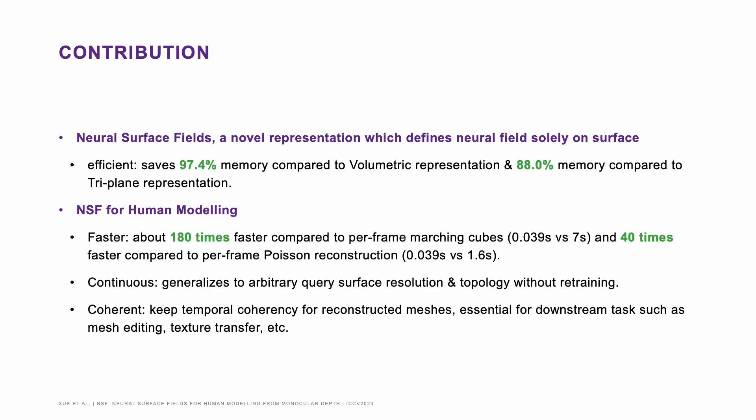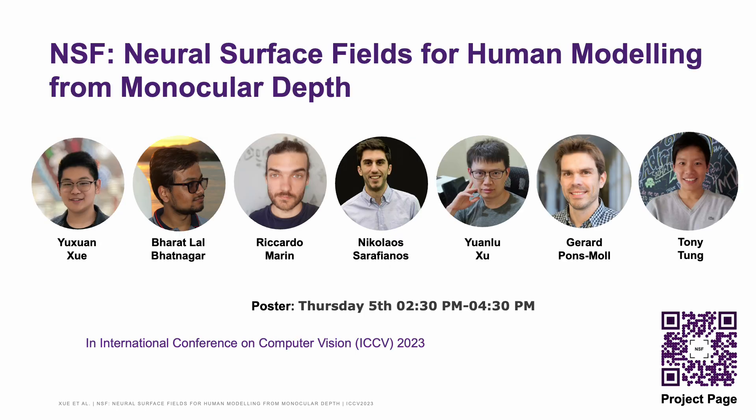We propose NSF, a hybrid representation which is more efficient than existing representations. In human modeling, NSF is faster and keeps coherency compared to implicit-based works. It is also continuous and flexible compared to mesh-based works. We believe this hybrid representation can have a variety of useful downstream applications and contribute further to the community. For more details and results, please refer to our paper and the project website. If you have any questions or suggestions, I warmly welcome you to our poster session on Thursday, 5th of October.